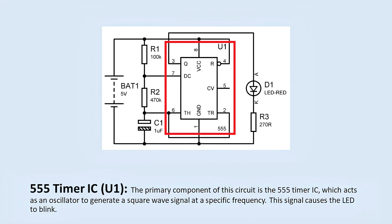Timer U1: The primary component of this circuit is the 555 timer IC, which acts as an oscillator to generate a square wave signal at a specific frequency. This signal causes the light-emitting diode to blink.